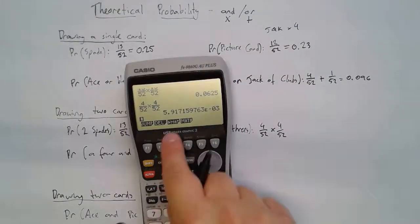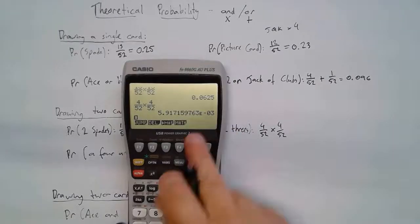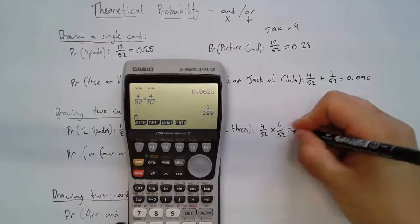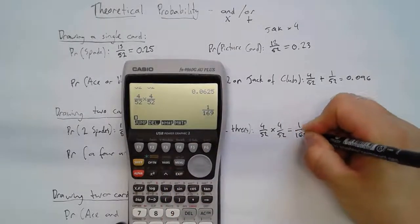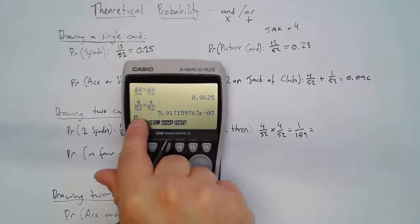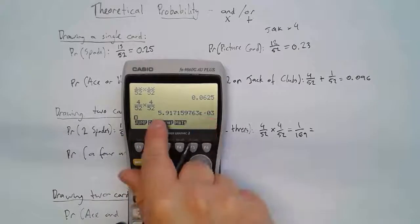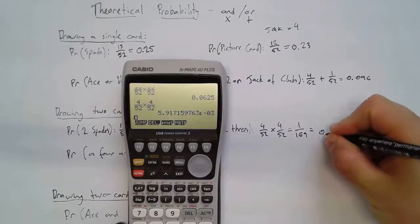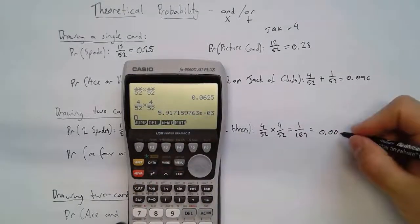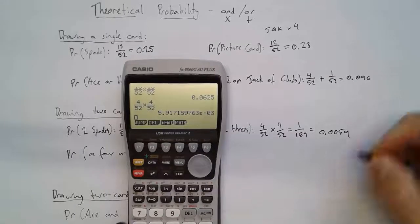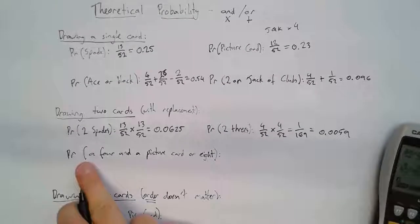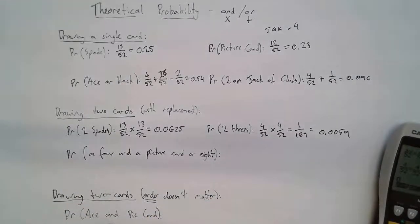If your calculator shows scientific notation, don't be alarmed. It just means the decimal point has moved three places to the smaller side. So it's going to be 0.0059 — two zeros in front of the 59.